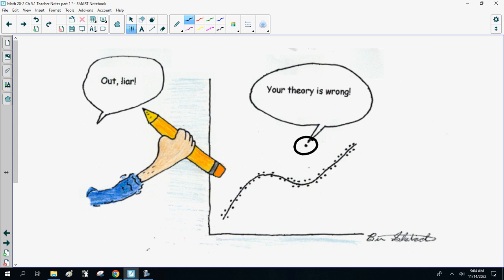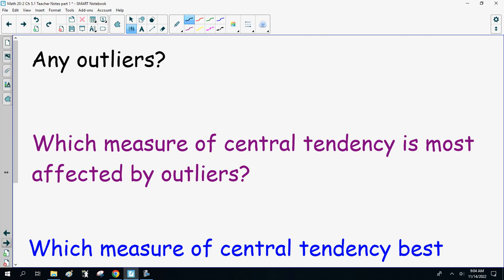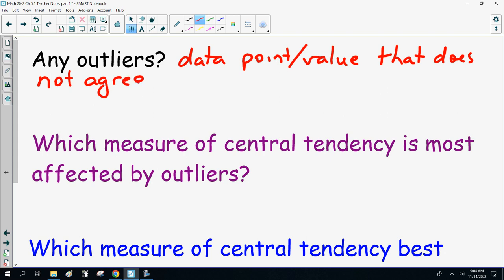There's a data point that's off all by itself. Any outliers in previous sets of data? Well, as I said, an outlier is a data point or value that does not agree with the others, or is way out on its own. So, that's my definition of an outlier.